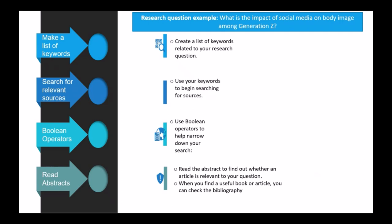For example, if my research question is 'What is the impact of social media on body image among Generation Z?' I use my title to create a list of keywords related to my research question. Keywords include social media, Facebook, Instagram, Twitter, Snapchat, TikTok, and so on. Body image synonyms would be self-perception, self-esteem, mental health. And Generation Z would include teenagers, adolescents, youth. These keywords are then used to search for literature on various databases.